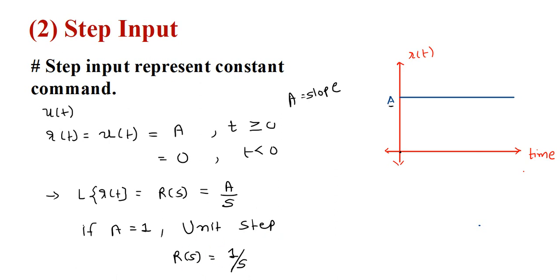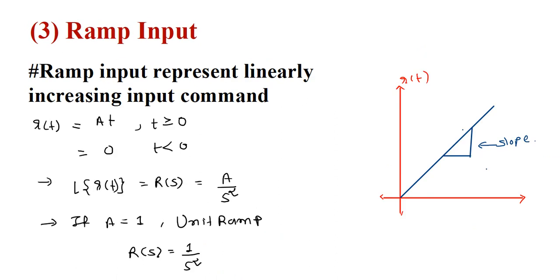Now we discuss the ramp signal. Ramp input represents a linearly increasing input command. Here you can see the ramp signal having slope a, and it is given by r(t) equal to a·t when t is greater than or equal to 0, where a is the slope. Its value is 0 when t is less than 0.